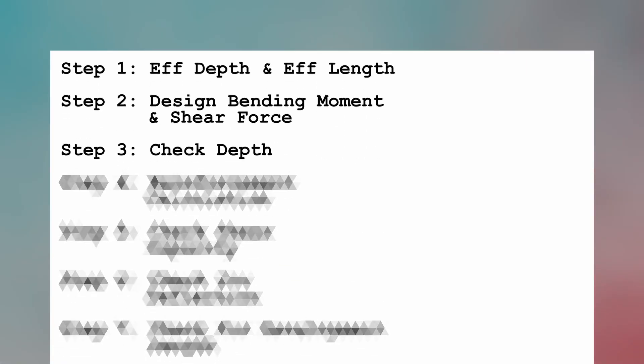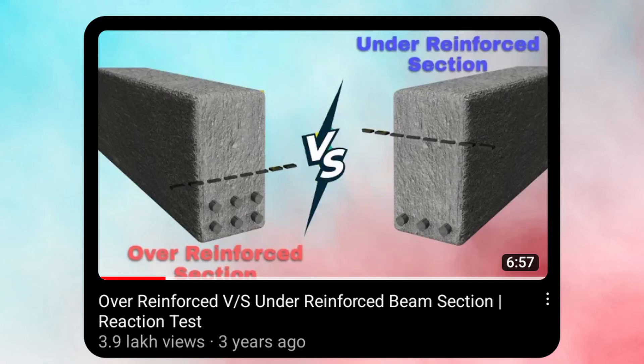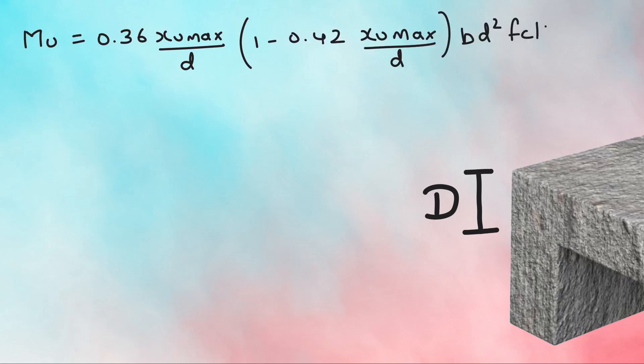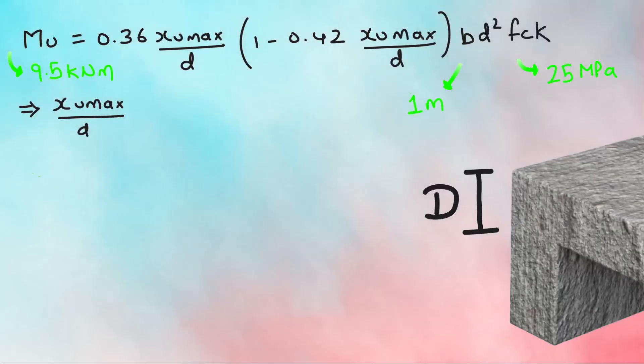Step 3 is to check whether the effective depth D we provided is safe for the factored moment MU by referring to this formula as per Annex G 1.1 C, which is for balanced section. You can watch this video to learn more about different types of sections through the i button here. In this equation, we have values for MU, FCK, and B. To obtain the values of XUmax by D, we have to refer to the notes of clause 38.1, which shows different values of XUmax by D for different grades of steel. Since we have used Fe 500, we will substitute the value of XUmax by D in our equation. So we get MU equals 0.133 FCK BD square for Fe 500.